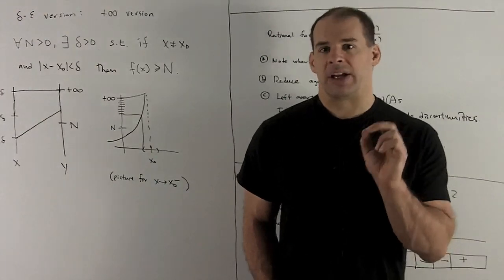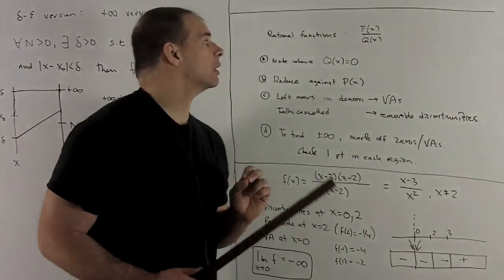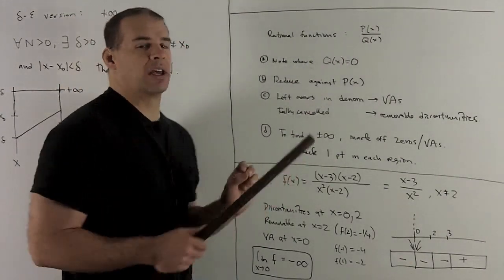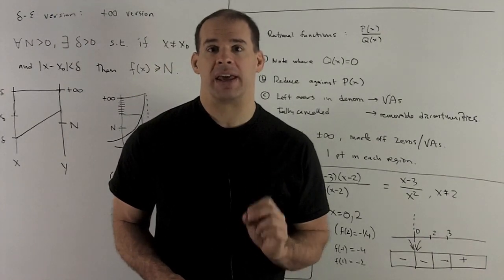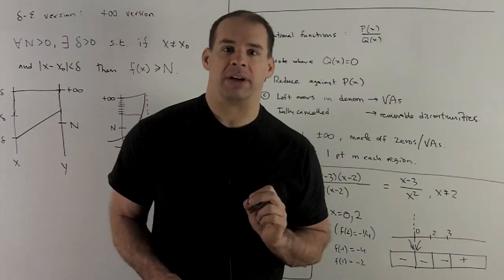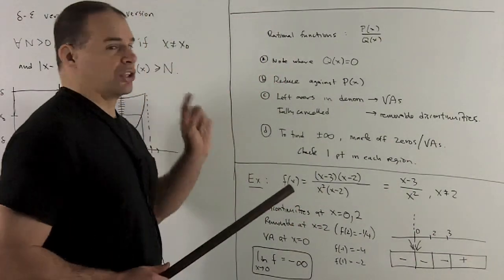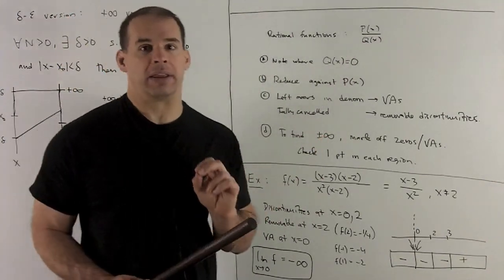All right. Let's take a look at some rules for dealing with rational functions. So if I have my rational function p of x over q of x, I want to know how do I find the vertical asymptotes that go with this, and how do I decide whether I'm looking at plus infinity or minus infinity when I do the one-sideds. First thing you have to do, you have to note where your denominator is going to be equal to zero before you do anything.